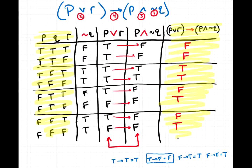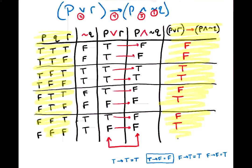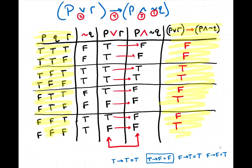Every one of these steps was based on the truth table definitions of those logical connectives — the negation, disjunction, conjunction, and conditional. You're always referring back to those definitions, which tell you the result when you apply one of those operations to one or two input statements. That does it for this example — I hope it was helpful.